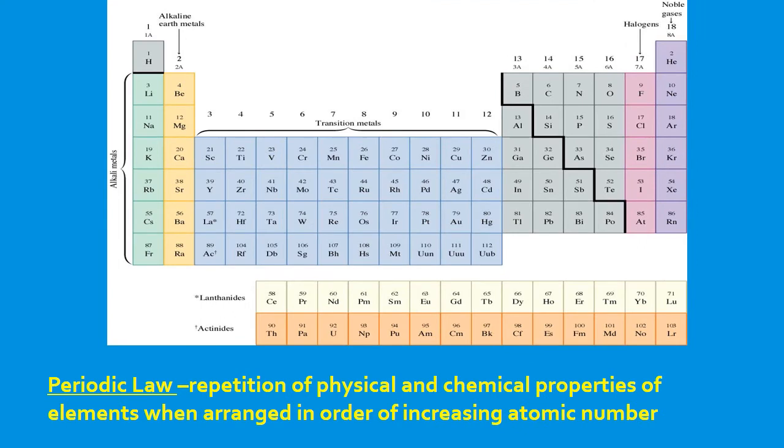Now the periodic law states that there's a repetition of physical and chemical properties of these elements when they are arranged in order of increasing atomic number. So the term periodic means repeated regular intervals or patterns. Kind of like what we go back to what John Newlands was saying, that there were patterns that repeated every eight element. Remember he called that the law of octaves.